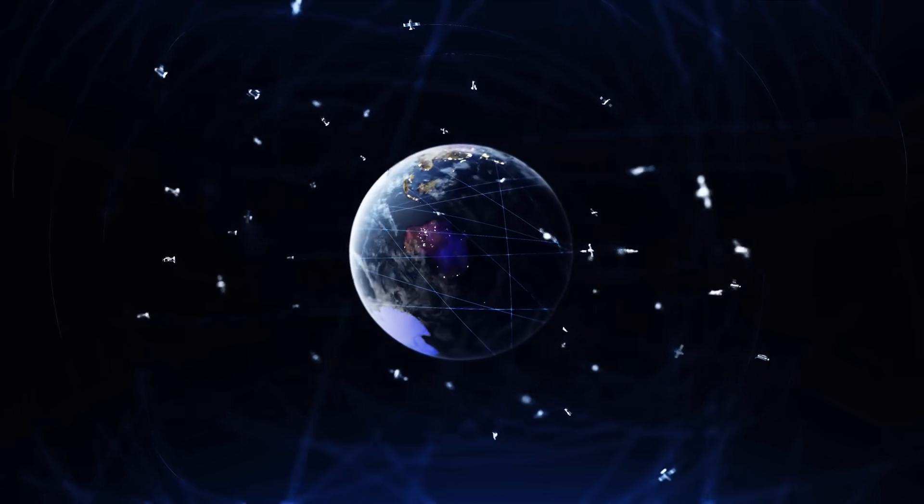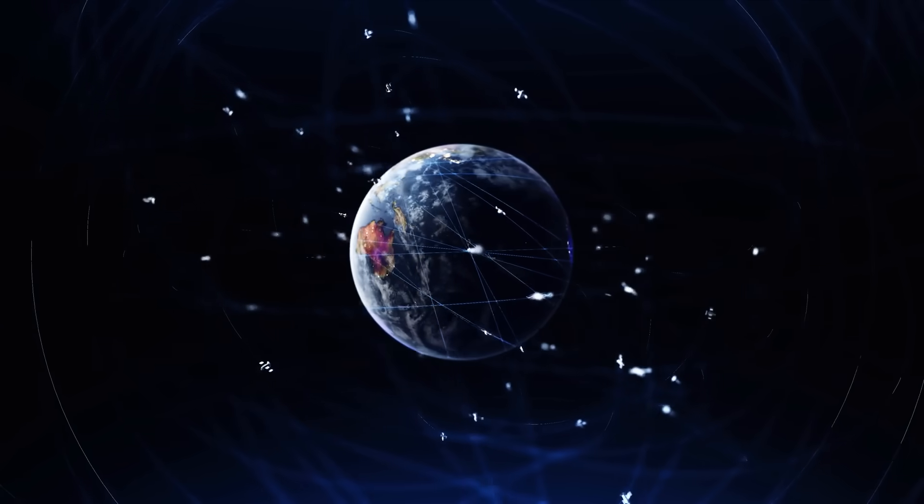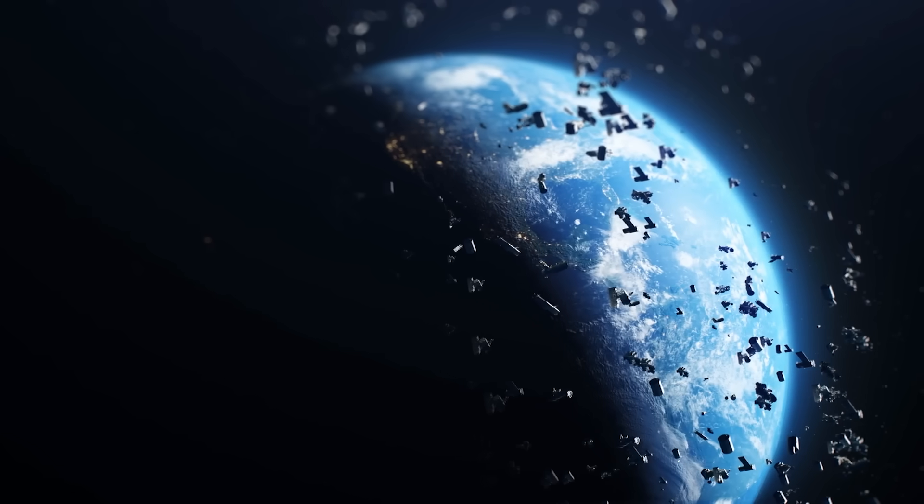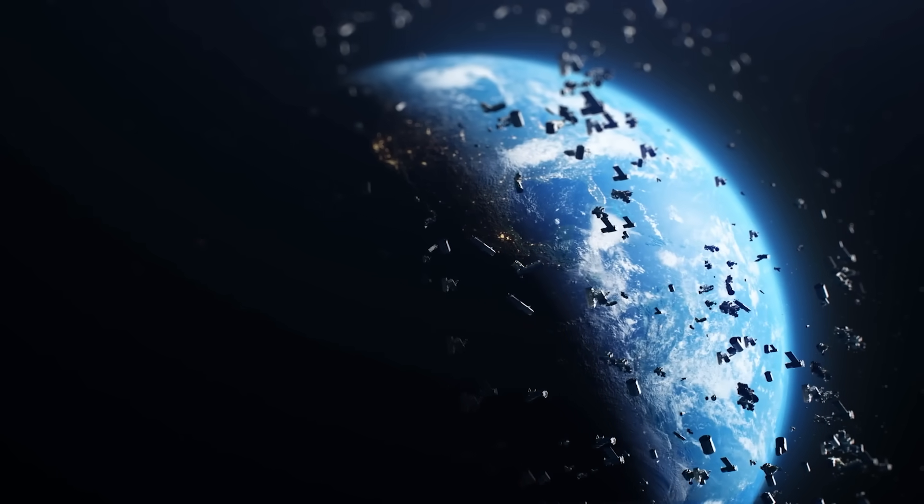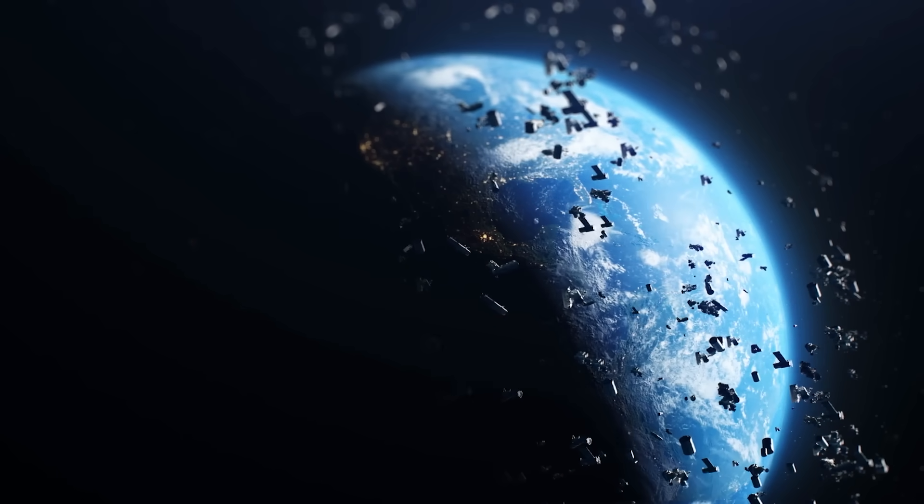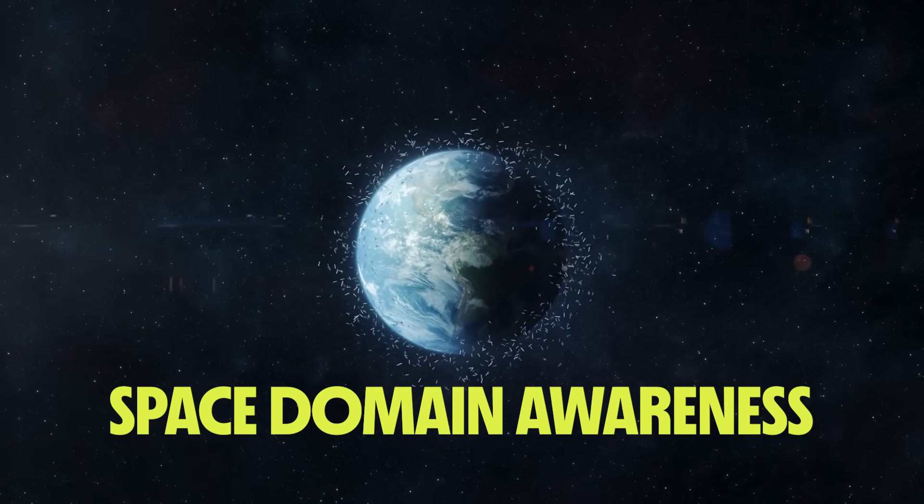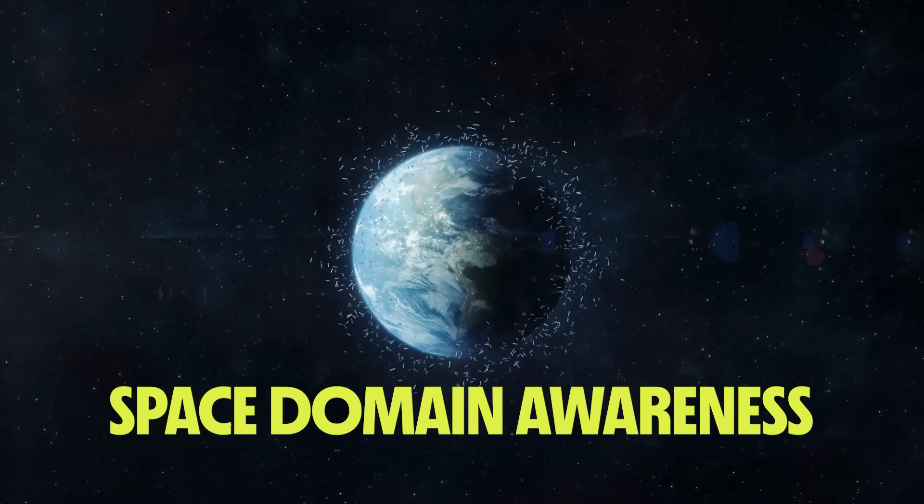For that high vantage point, Owl is going to use artificial intelligence to detect, track, and characterize objects in orbit, including satellites, debris, and other floating material, either man-made or natural. This is something we call Space Domain Awareness, or SDA, and it becomes much more important with the more stuff we launch into orbit.